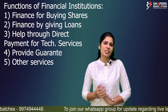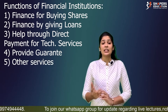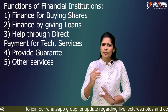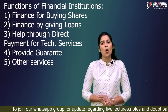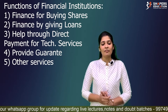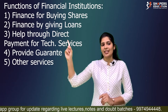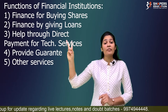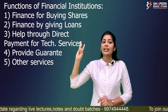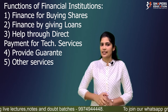The fifth function is other services — financial institutions also provide services like market research and other advisory support needed by companies. So the five functions of financial institutions are: provide finance for buying shares, provide finance by giving loans, help through direct payment for technological services, provide guarantees, and other services.